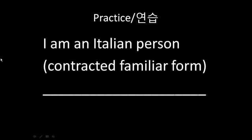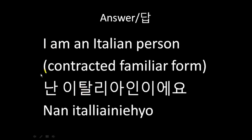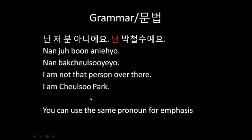Let's do some practice. How would you say 'I am an Italian person' using the contracted familiar form of I? The answer is 난 이탈리아인이에요. Now, even though pronouns and topic markers are often omitted, you can use them in successive order for emphasis.